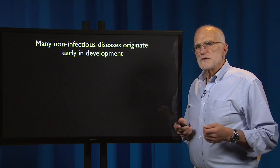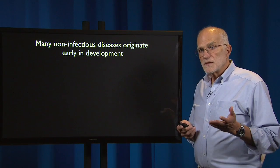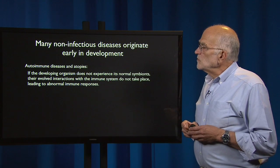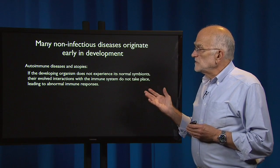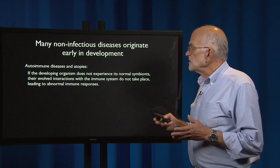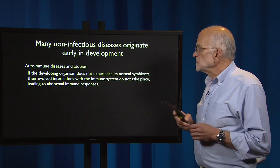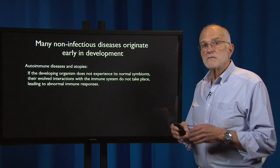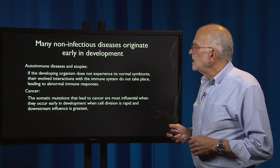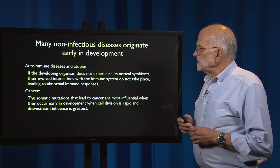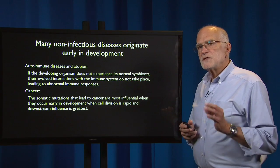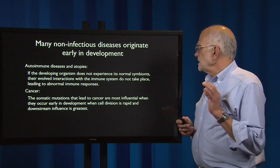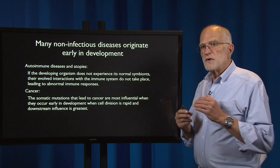Many of the non-infectious diseases — the chronic diseases — originate early in development. Autoimmune diseases and atopies are examples. If the developing organism does not experience its normal symbionts, their evolved interactions with the immune system don't take place, and that leads to an abnormal immune response. As for cancer, the somatic mutations that lead to cancer are most influential when they occur early in development, when cell division is rapid and when the downstream influence is greatest.